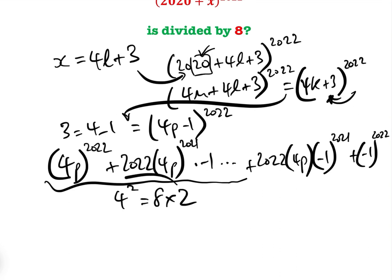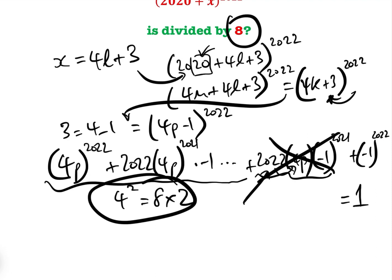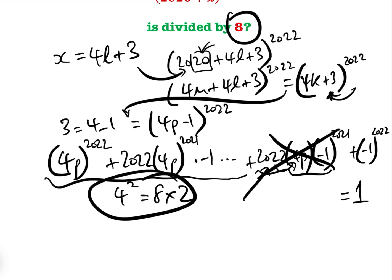All of these ones will be multiples of at least 4^2, which is 8 × 2. And so therefore, we know that they will all be multiples of 8. This one here, 2022, is an even number. And when we multiply an even number by 4, we therefore know that will be a multiple of 8 as well. And so we're only left with (-1)^2022, which again equals 1.